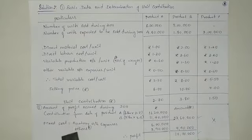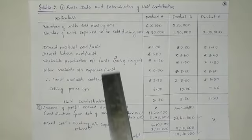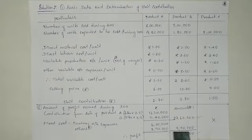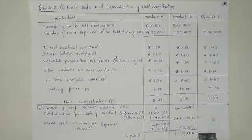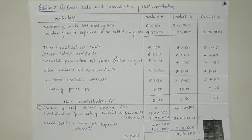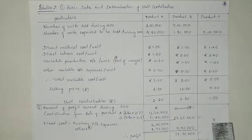After reducing the fixed cost, we get a profit of rupees seventeen lakh seventy thousand. Working notes are provided to understand how this information is calculated. This contribution and profit figure is used to analyze the situation after diversification — to see whether the company is making a profitable move or not.